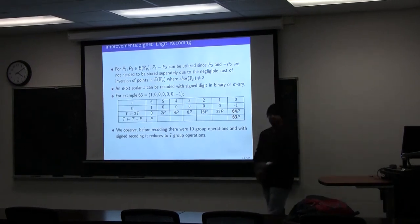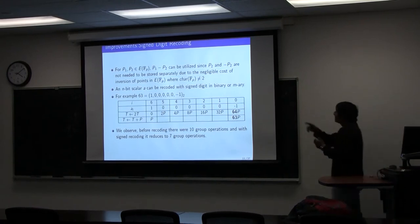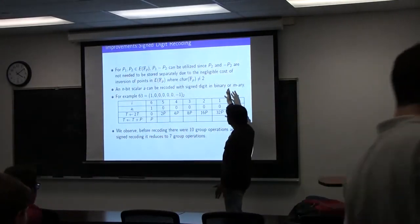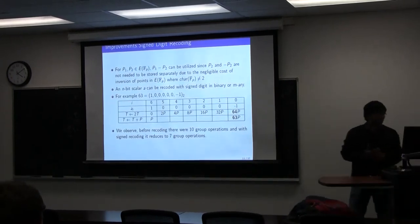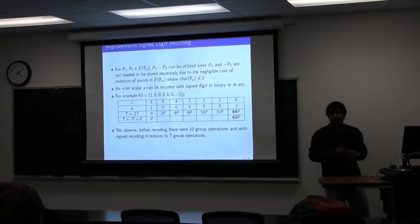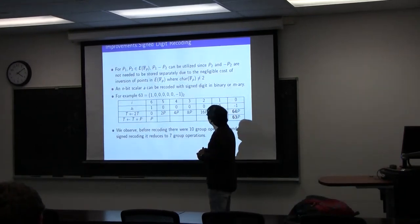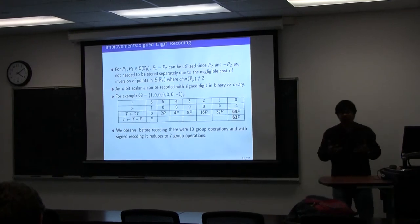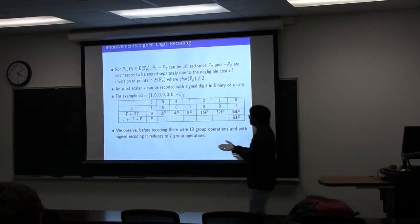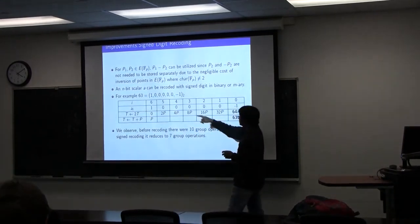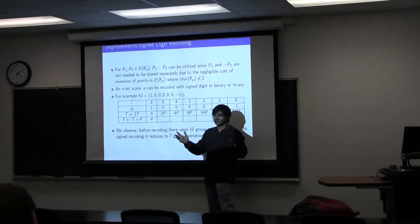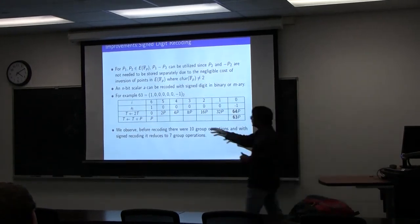Since the inverse of a point comes at very low cost — almost free — we can also involve negative points in our expressions, such as P1 − P2. We can recode a number so that we allow not only zeros and ones, but also negative ones. For example, 63 can be expressed as (1, 0, 0, 0, −1), which also equals 63. This is a different kind of signed representation we can use.